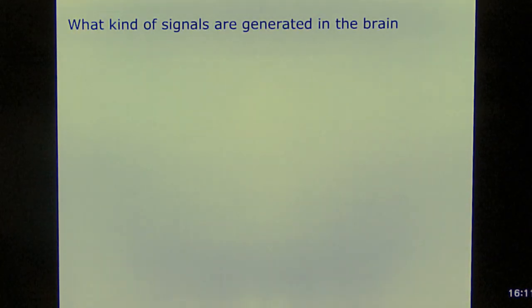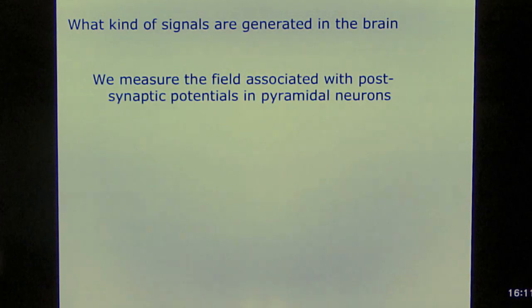But first, what kind of signals are generated in the brain? Well, as Mati explained, we measure the field that is associated with post-synaptic potentials, excitatory and inhibitory, in the pyramidal neurons. The pyramidal neurons are perpendicular to the cortical sheet, and if that's sufficiently superficial, we record that with MEG.